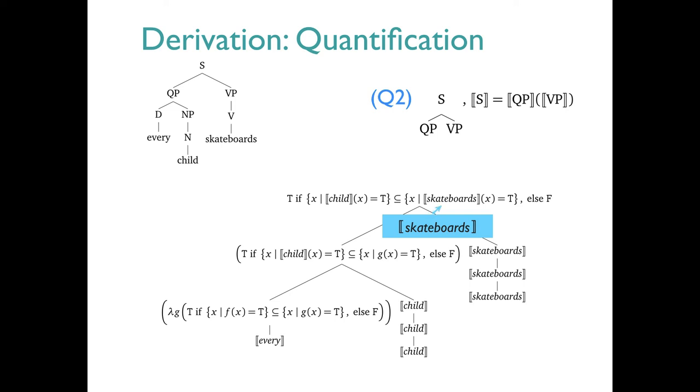Notice that this is just saying we have a value of T if the children, more precisely the characteristic set of the child function, is a subset of the skateboarders. So we've derived the final meaning, which corresponds to a claim about the world, as we would expect given our intuitions about the sentence we're analyzing.